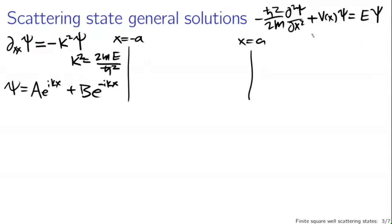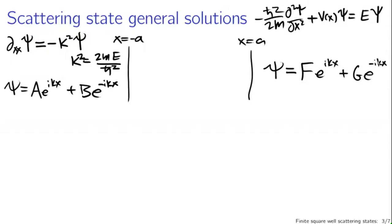The region where x is greater than a gives us an exactly identical Schrödinger equation and identical solutions, except with slightly different constants. Our wave function ψ in this region is given by F·e^(ikx) plus G·e^(-ikx). I've used different constants F and G, but the same k, since we're solving the same Schrödinger equation with the same energy E, and therefore the same value of k defined as 2mE over ℏ².